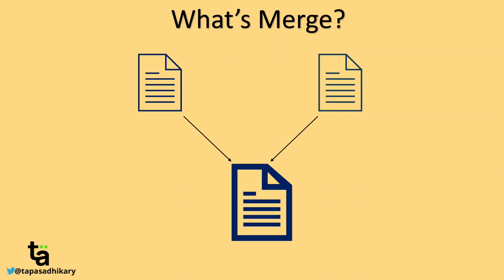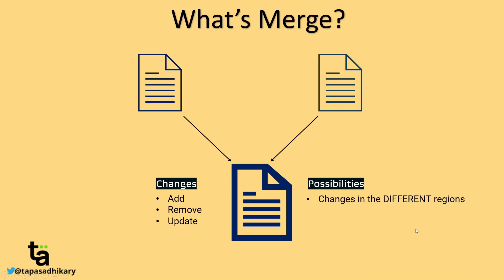When a merged version of a file is created, the changes can be adds, updates, or removes. When these changes happen, there are two possibilities. The changes could have occurred in different regions of the file — for example, one version has changes at the top and another at the bottom. If you merge these two, one change is at the top and another at the bottom — they are in different regions. Another possibility is changes in the same region — for example, the same line got updated in both versions, and now if we are merging, that update has to be taken care of.